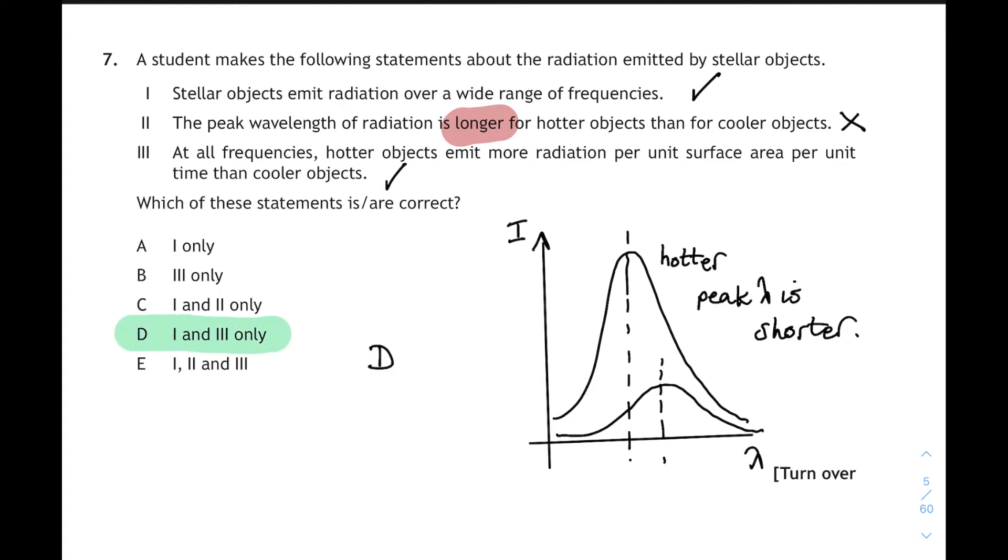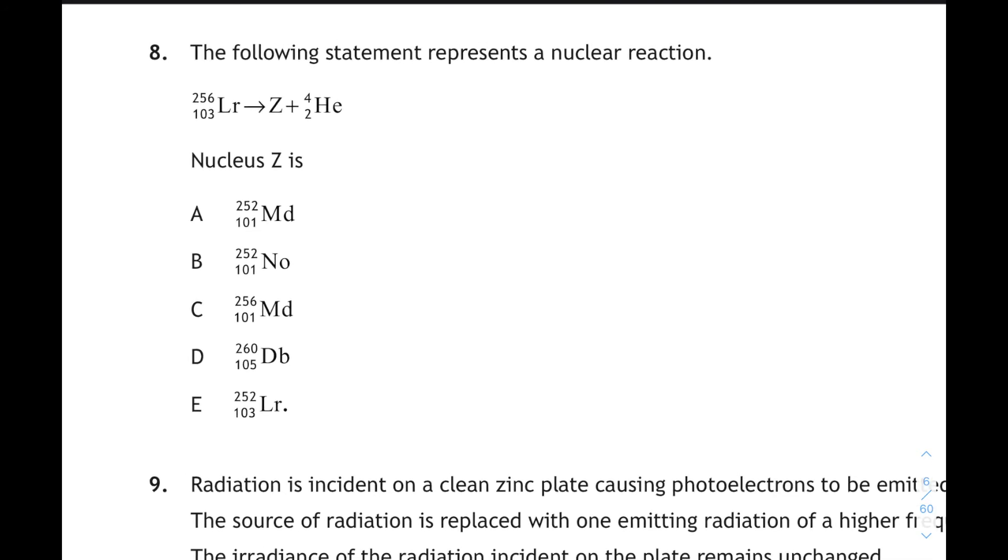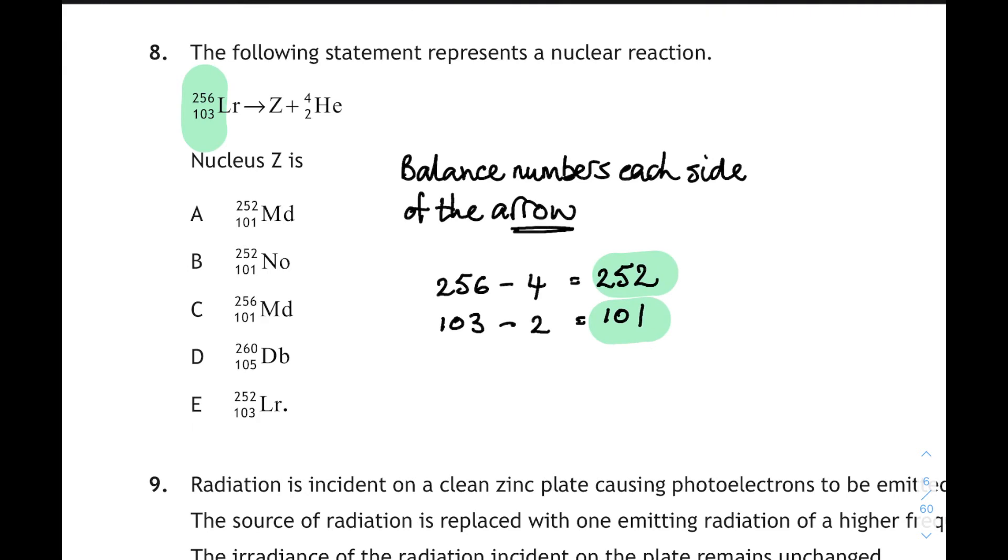Question 7. Moving on, question 8. This is nuclear reactions. Following statement represents a nuclear reaction. We have to identify nucleus Z. So same story here. Balance the numbers either side of the arrow. Whatever the numbers are on the left, then the sum on the right has to be equal to that. So it will be 256 on the left is the top number. So we want to do 256 minus 4 will give us the top number of the Z nucleus. That will be 252. And on the bottom, it's 103 minus 2 is 101. Now, if we look at our answers, there are two possible answers that are 101 and 252. It's A and B.